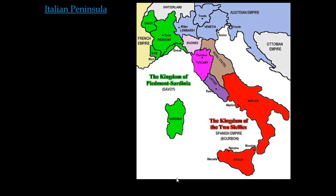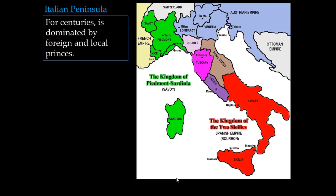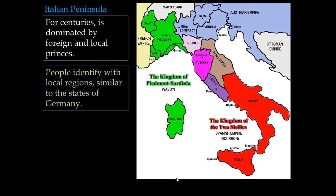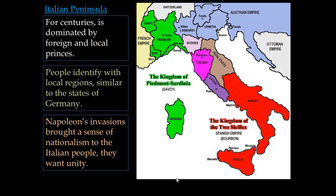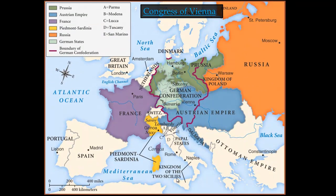The first thing we need to look at is the Italian peninsula. For centuries, pretty much since the fall of the Roman Empire in the 5th century, it's been dominated by foreign and local princes. People identify with local regions, which you can see highlighted in different colors here, similar to how Germany was before unification by Bismarck. Napoleon's invasion of Italy brought a sense of nationalism to the Italian people — they want unity, not separate little principalities, but their own Italian nation.